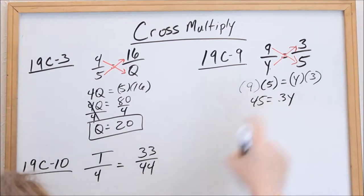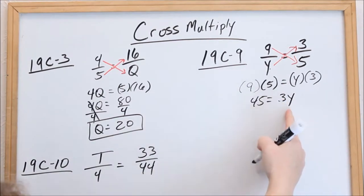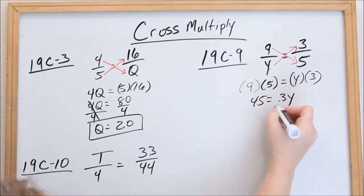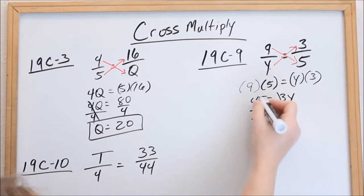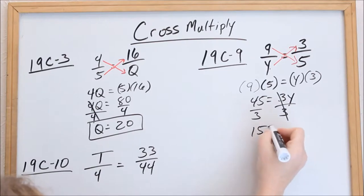Remember, when you have a number in front of a letter, that implies multiplication. We're solving for y. We need to get rid of 3 — it's being multiplied, so we have to divide it away. 45 divided by 3 is 15.